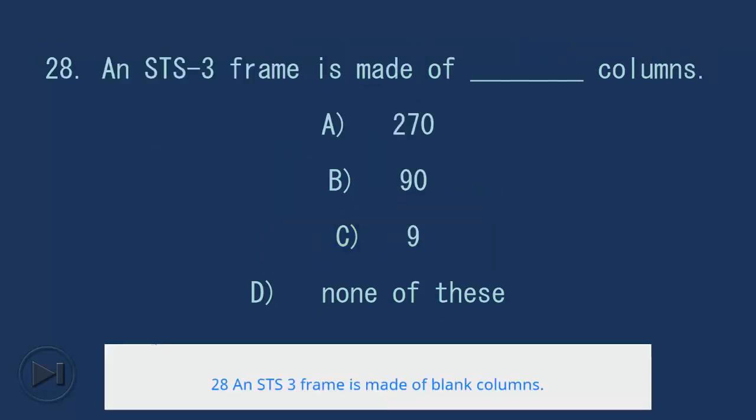28. An STS-3 frame is made of blank columns. A. 270, B. 90, C. 9, D. None of these. Answer: A. 270.